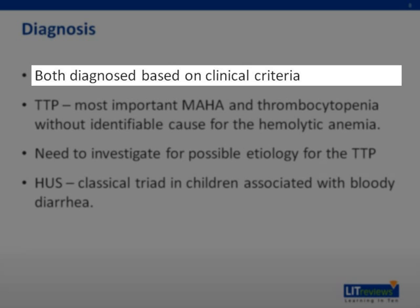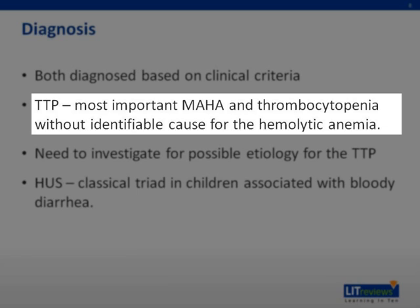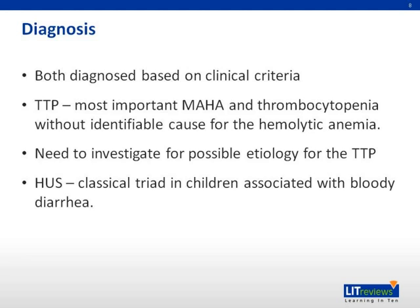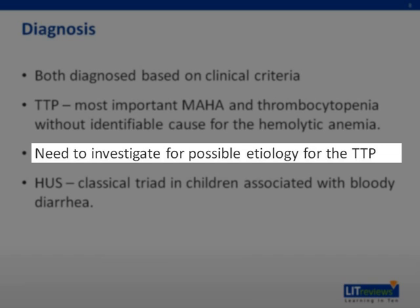The diagnosis of both TTP and HUS is based on clinical features. Although classically TTP has five main clinical presentations, the presence of microangiopathic hemolytic anemia with thrombocytopenia without other explainable causes is the key to the diagnosis. Field guidelines also recommend a similar approach. Early intervention based on high clinical suspicion with supportive laboratory results will help with the diagnosis of TTP. It is important to investigate for possible etiology as this has prognostic significance for plasma exchange and other conventional treatments.